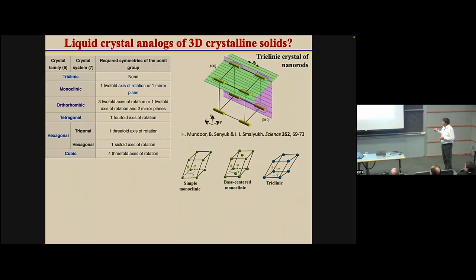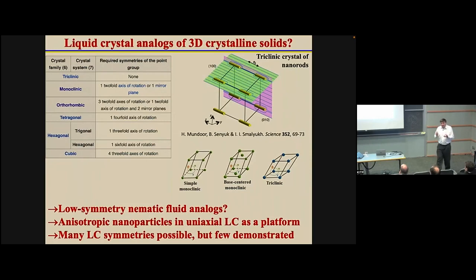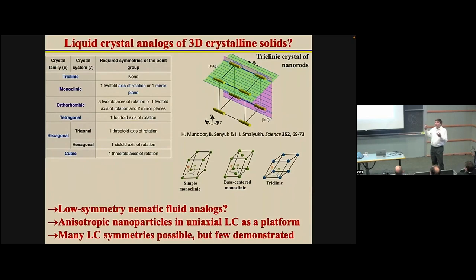For example, triclinic colloidal crystals can be formed by electrostatically charged nanorods in a nematic host medium. However, my goal today is to go beyond what is possible from known crystal symmetries. All known crystals are limited to the number of different crystal symmetries because the symmetry of the basis and the crystal class have to be compatible. No such restrictions exist when it comes to nematic liquid crystal fluids with uninhibited fluidity, so potentially we can realize a much larger variety of symmetries.